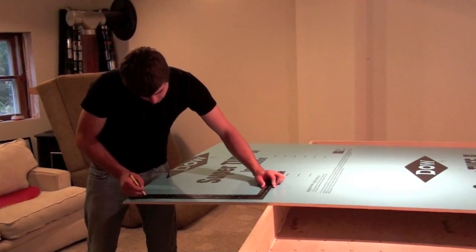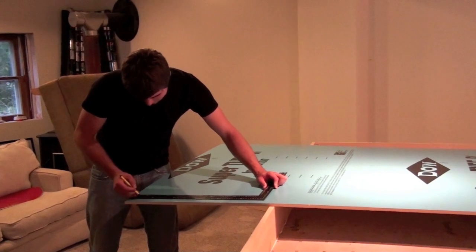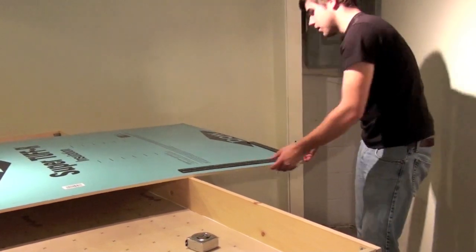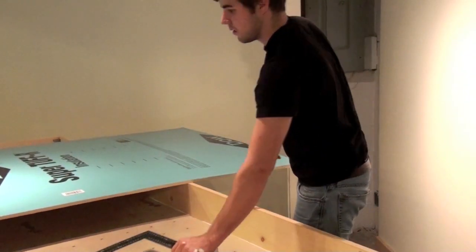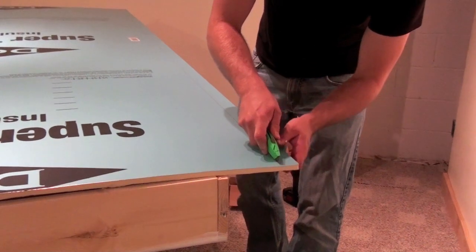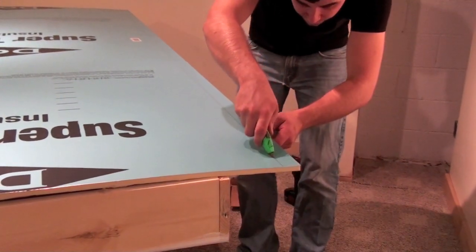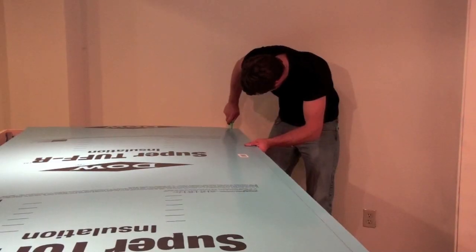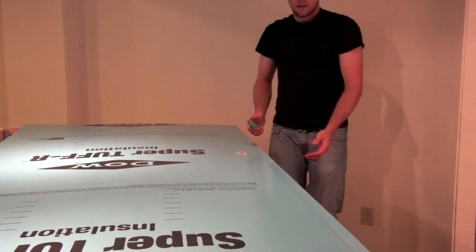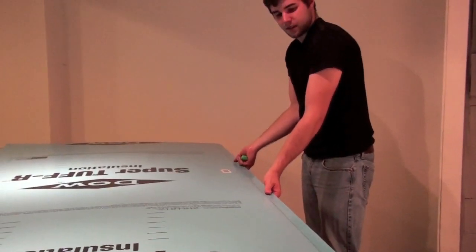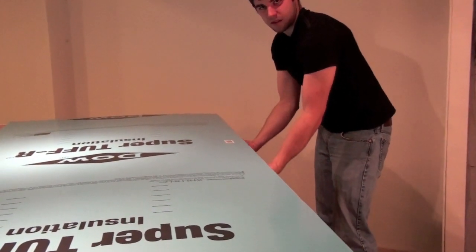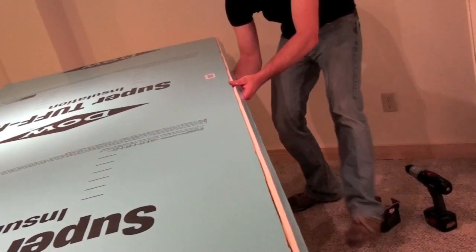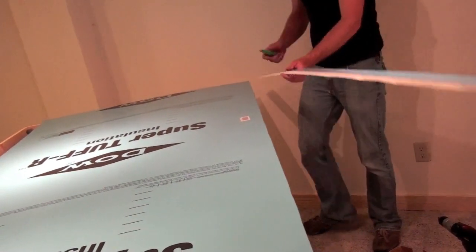Using a square, we'll connect the marks together to give us a line. Use a razor blade to cut down the line. Once the cut's complete, grab it in the middle, press down. It should break away like this. And then go ahead and run your blade down the opposite side to break that strip away for a nice cut.